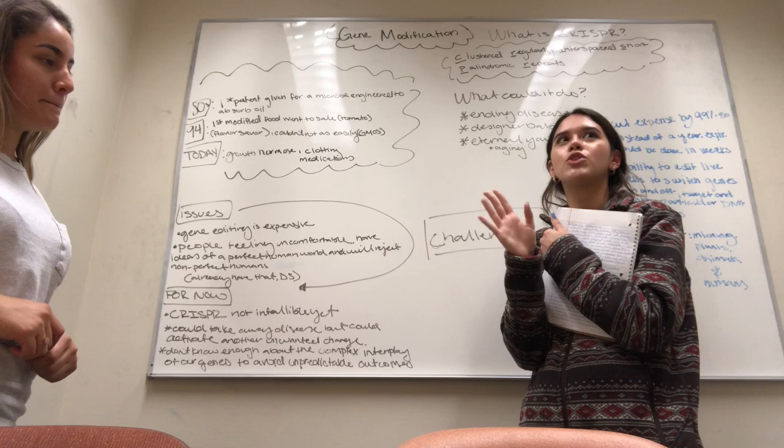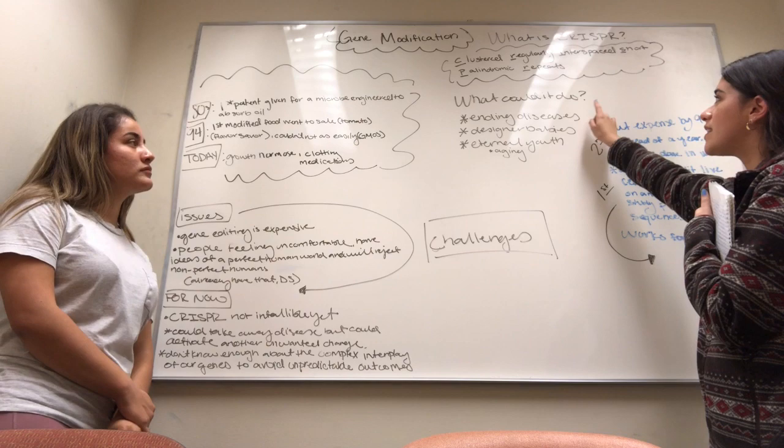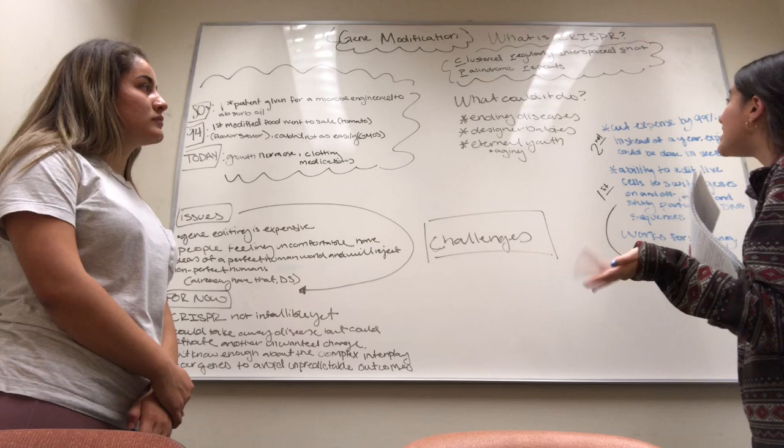CRISPR has the ability to cut DNA. Because previous methods were so expensive and would take a year's work, you can do it in weeks with CRISPR. They think it could eventually end diseases, create designed babies, and provide eternal youth.